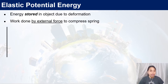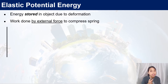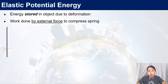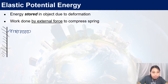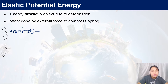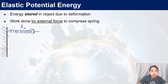Here's an example about work done by an external force — like a force from my hand — to compress a spring. At the bottom, this line is a wall. If you have a spring of a natural length, this length is what I call L0. So this is its natural length, uncompressed.